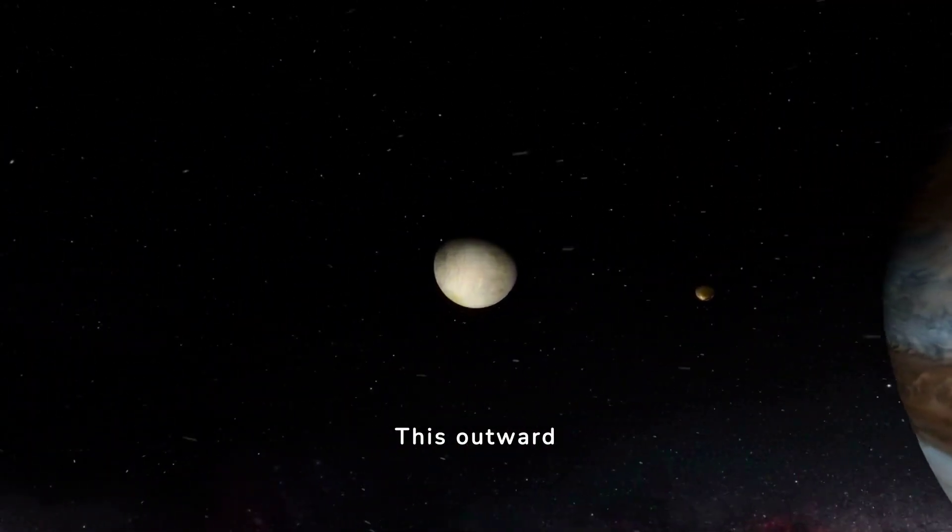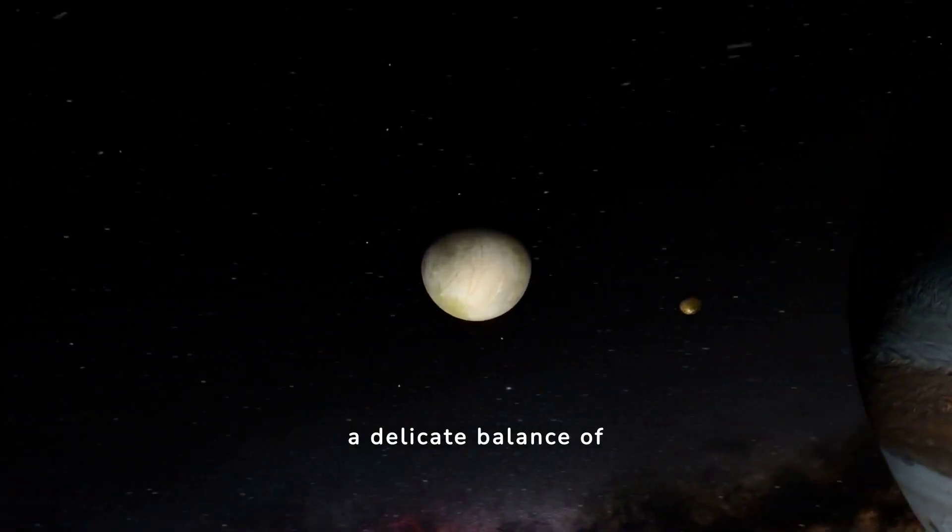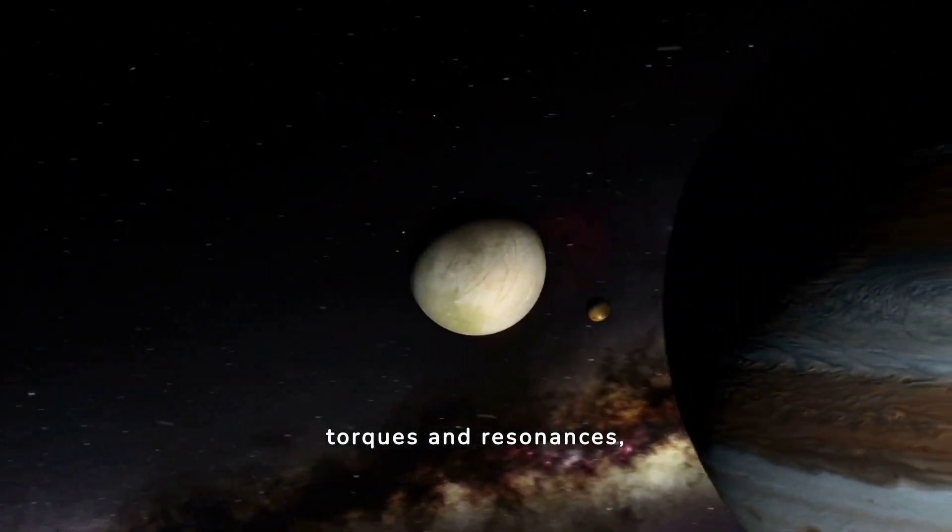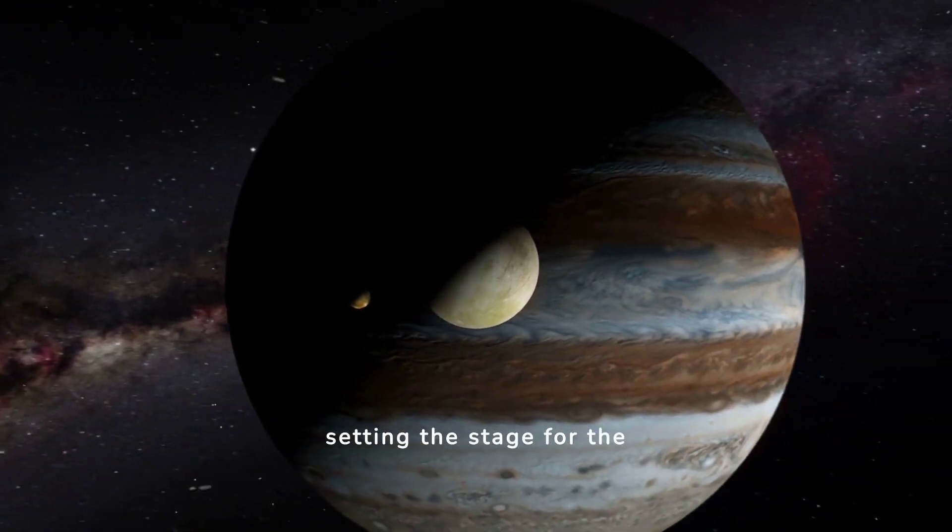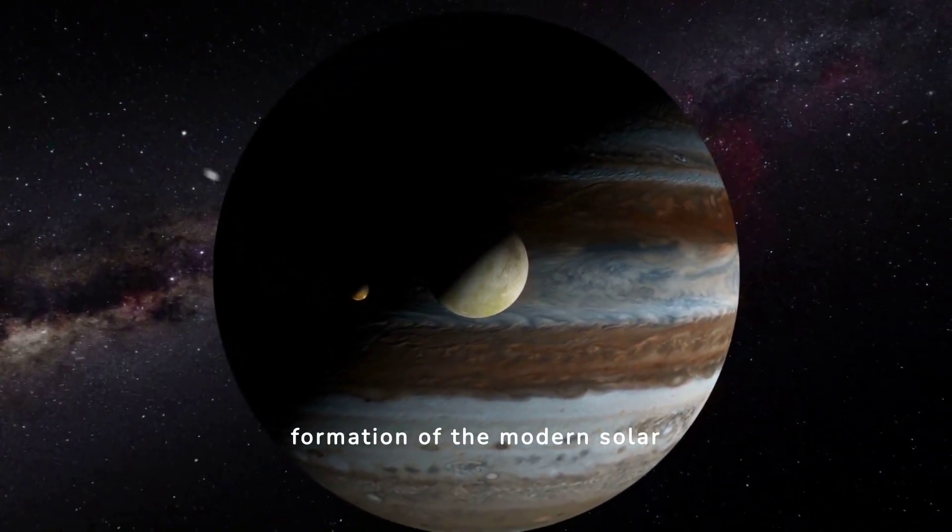This outward migration, characterized by a delicate balance of torques and resonances, ultimately halts near Jupiter's current orbit, setting the stage for the formation of the modern solar system.